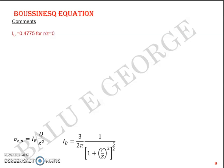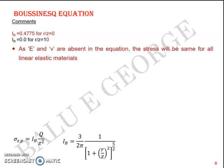The value of IB for R/Z = 0 is 0.4775 — this is a famous result meaning just beneath the point load, IB = 0.4775. IB is assumed to be 0 when R/Z is 10 or greater. Since Young's modulus E and Poisson's ratio μ are absent from the equation, the stresses will be the same for all linear elastic materials, so it's not limited to soil.